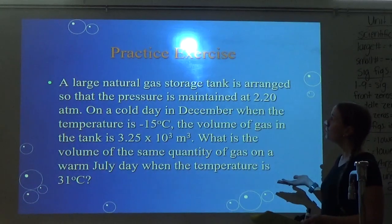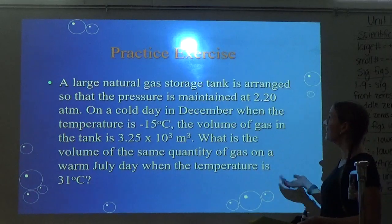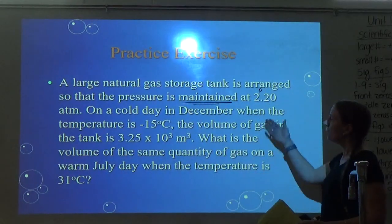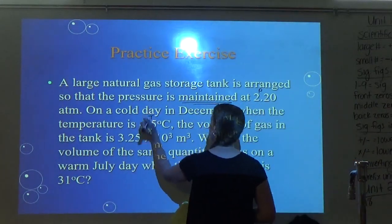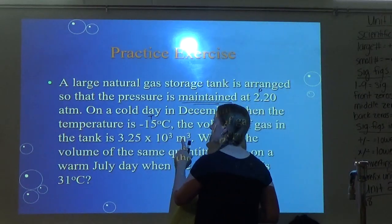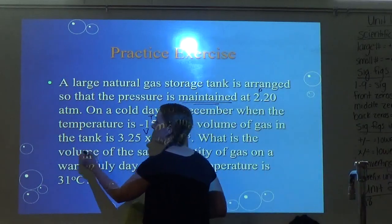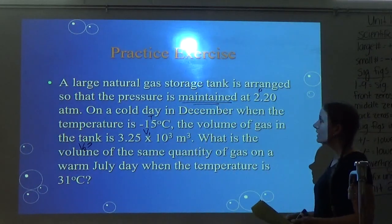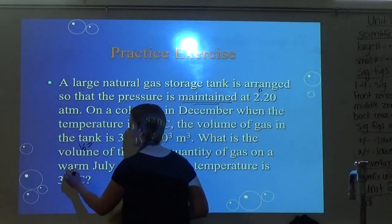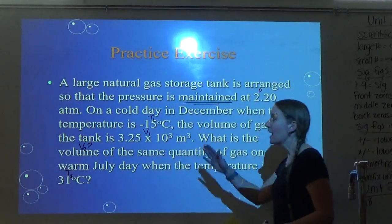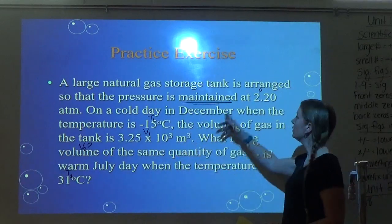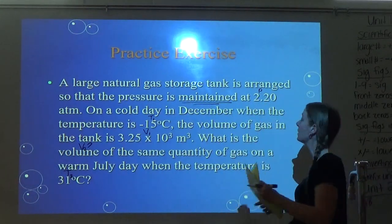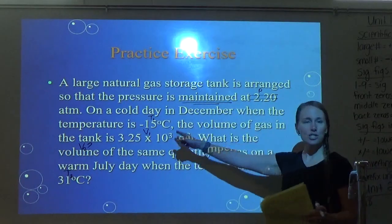A large natural gas storage tank is maintained at 2.2 ATM. On a cold December day at negative 15°C, the volume is 3.25 × 10³ meters cubed. What is the volume on a warm July day when the temperature is 31°C? Since pressure is maintained — it's not changing — we don't need it. We have V's and T's, so this is Charles' Law.